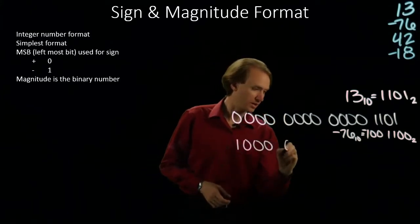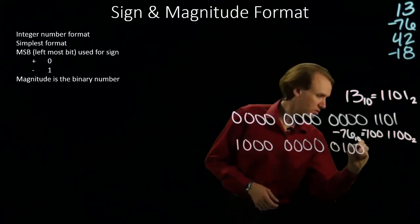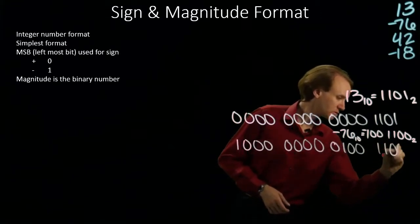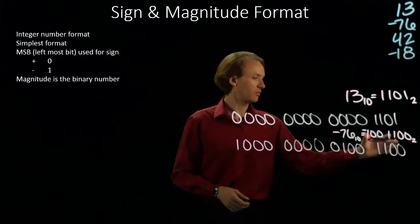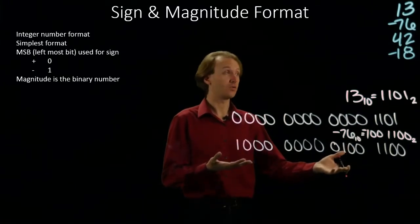So I will add a number of leading zeros and then the actual magnitude of my number. And that's it. That's negative 76 in sign and magnitude format.